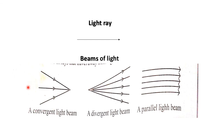In a convergent light beam, a bundle of light rays meets at a certain point — when light rays meet at a certain point we call it a convergent light beam. A divergent light beam is a bundle of light rays that travel away from a certain point. These are the three types of light beams.